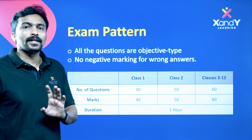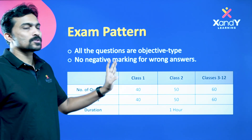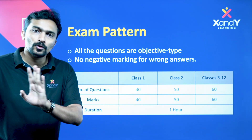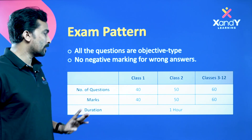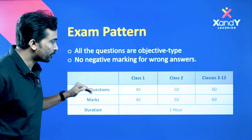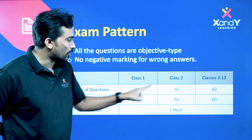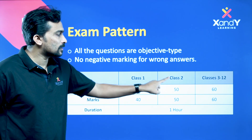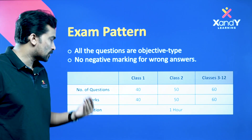The exam pattern is straightforward. All questions are objective type. There is no negative marking for wrong answers. For Class 1 and 2, there are 40 questions. From Class 3 onwards, there are 50 questions.